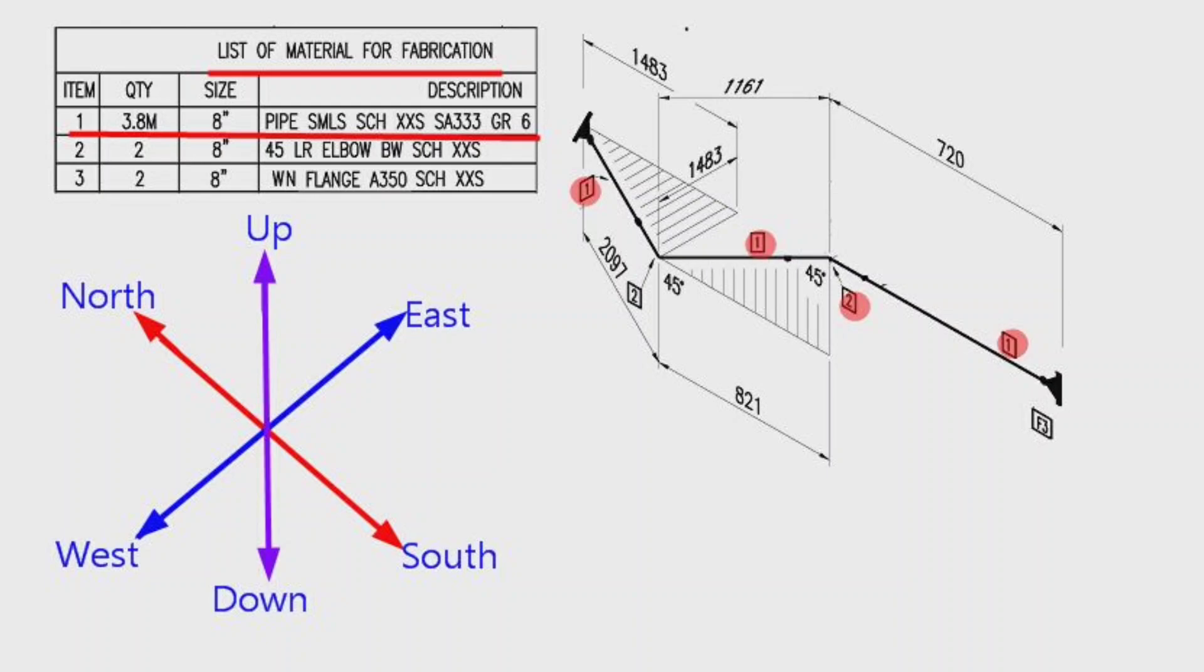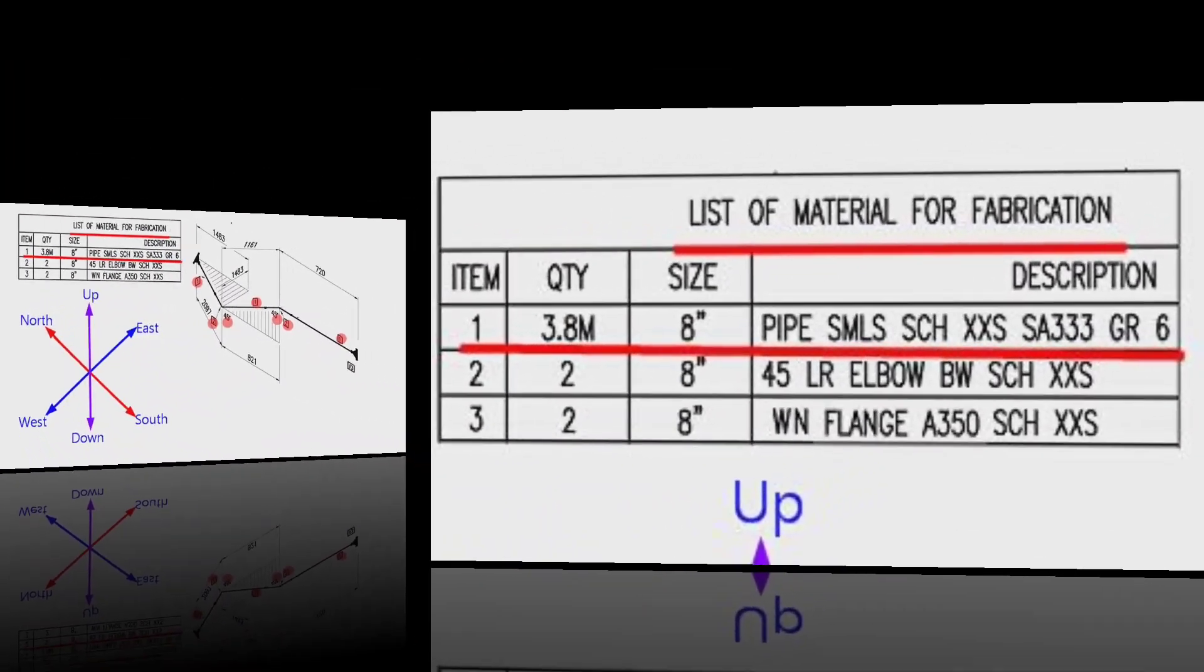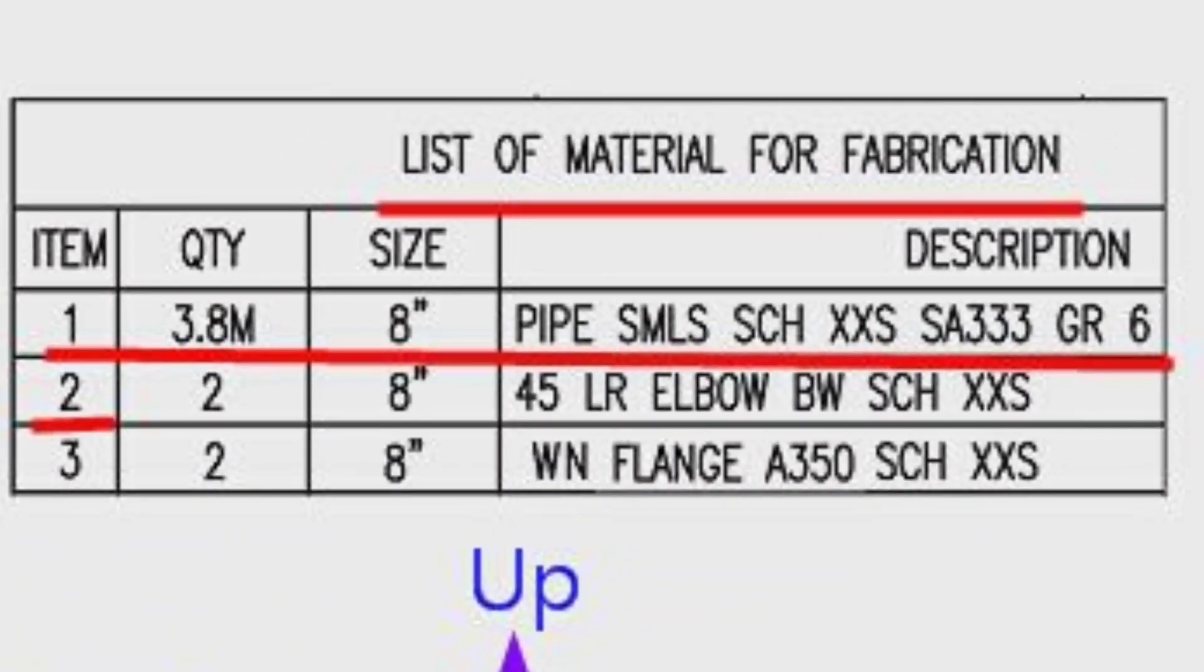Detail number 2 was used in two places in the pipe drawing. Let's look at the material list. The item number 2: the quantity is 2 pieces, size is 8 inches, 45 degree long radius elbow, schedule is XXS.